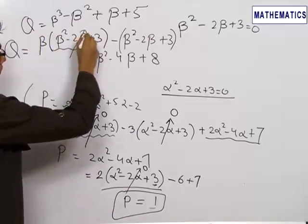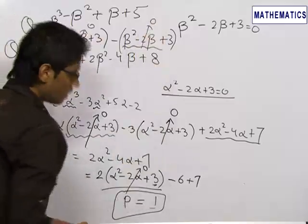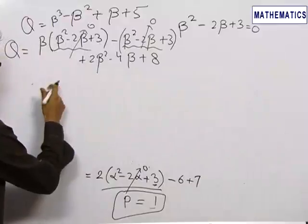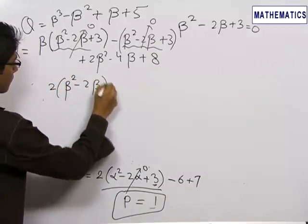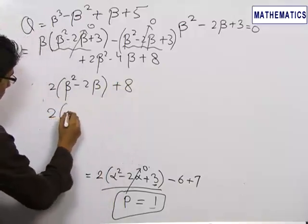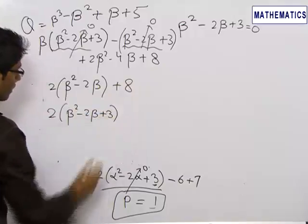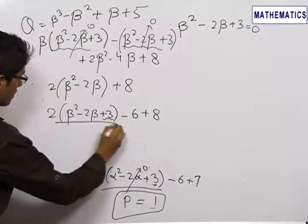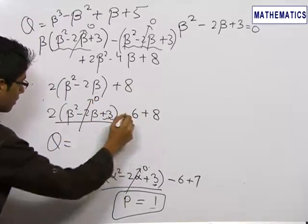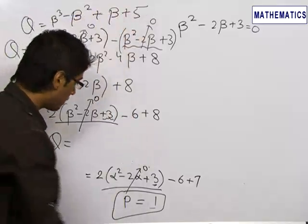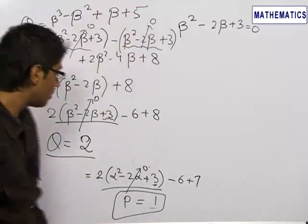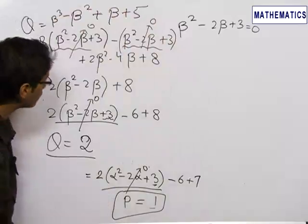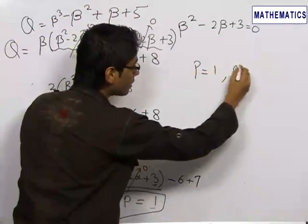Since β(β² - 2β + 3) = 0 and -(β² - 2β + 3) = 0, we are left with 2β² - 4β + 8. We write this as 2(β² - 2β + 3) - 6 + 8 = 0 + 2, so q = 2. The long term β³ - β² + β + 5 reduces to 2. The actual roots are therefore p = 1 and q = 2.